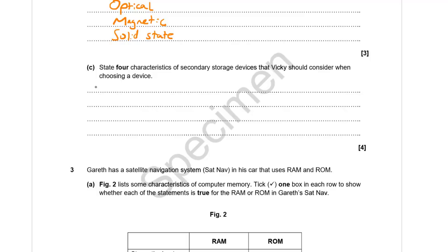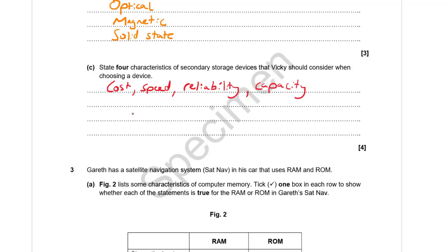We then need to state four characteristics of secondary storage devices Vicky should consider when choosing. These include: cost, speed (how fast data can be read or written), reliability (can you trust it to work?), capacity (the actual size), durability (how easily is it broken?), and portability. Choose any four. It's a 'state' question, so you don't have to do more than list them.